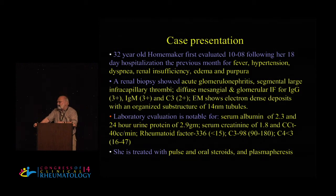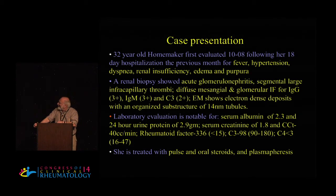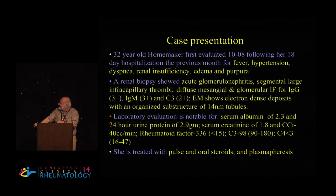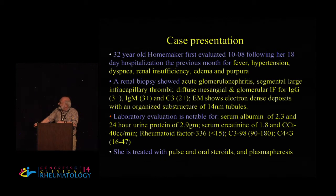She had developed renal insufficiency, edema, and purpura. During the course of that hospitalization, a renal biopsy was done, and it showed acute glomerulonephritis. She had segmental, very large intracapillary thrombi — but this was not antiphospholipid antibody syndrome, as I'll come back to. She had diffuse mesangial and glomerular immunofluorescence, which was positive for IgG, IgM, and complement. And she had a rather unusual electron microscopic evaluation showing electron-dense deposits with an organized structure — 14 nanometer tubules.